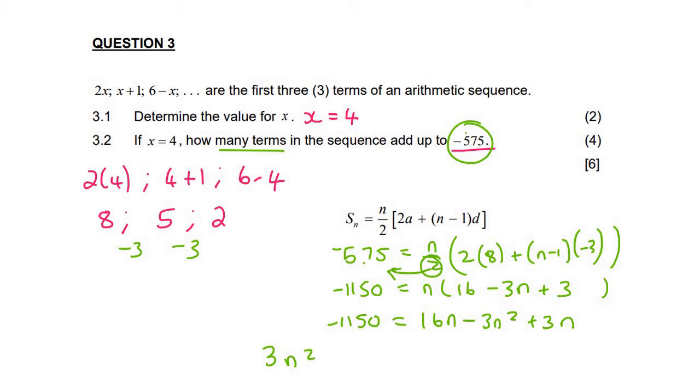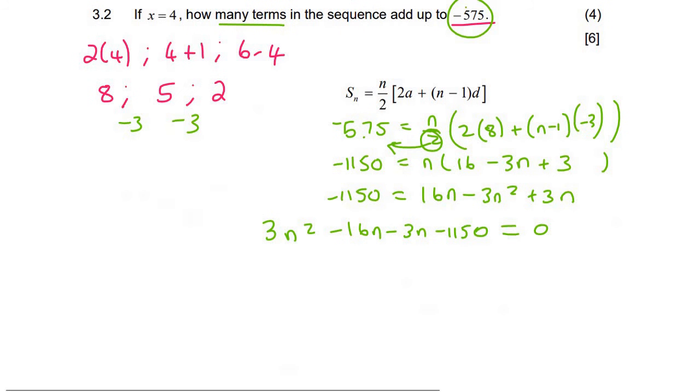Now we're going to get a trinomial. So I'm going to take everything to the left hand side and then make it equal to 0. And then we're going to get 3n squared minus 19n minus 1150 equals 0.